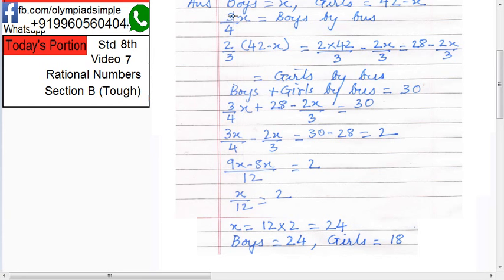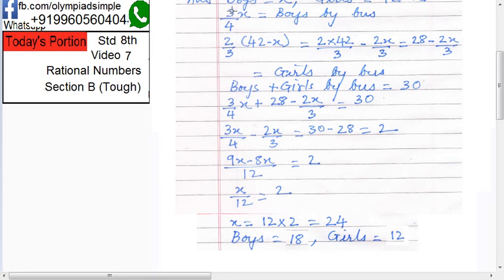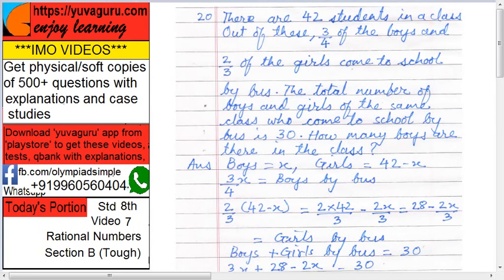So boys are how much? 3x upon 4. So 3 into 24 upon 4. So it comes out to 3 by 4 into 24, it comes out to be 18. And girls are 30 minus 18, that is 12. Problem is a bit tough. Practice it yourself. Then you will learn how to solve this problem.